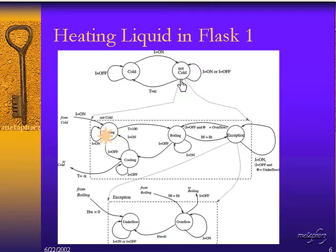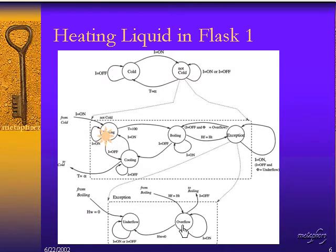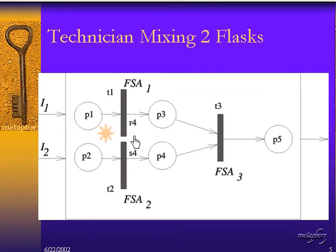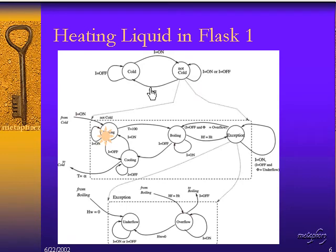The cold state represents ambient room temperature, and the not cold state represents every other temperature above that. If we take our microscope and zoom into the not cold state, we see a finite state machine with four states: heating, cooling, boiling, and an exception condition representing underflow or overflow of the liquid. What's interesting is that we start with a Petri net, zoom into T1, and get a hierarchical model — yet this is a homogeneous hierarchy, because all three levels are finite state machines.